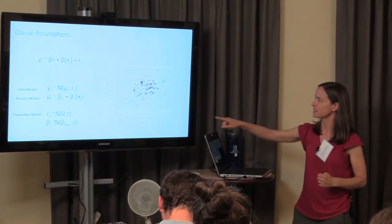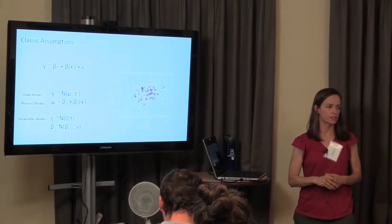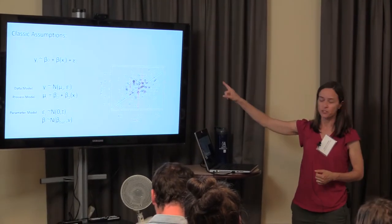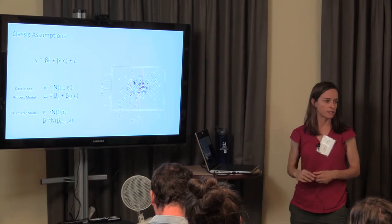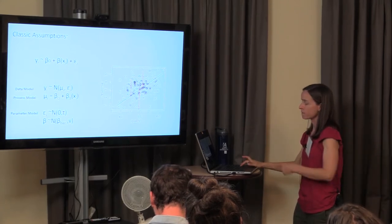In a Bayesian framework, even our parameters are treated as random variables, and we assume they have a distribution that we describe — we're usually trying to describe the variance on that distribution. Most of this spread is considered to be observation error. Given the process model, if you could measure things or count them better, then they should fall on that process model line.